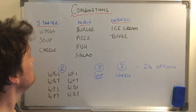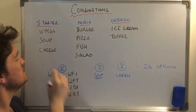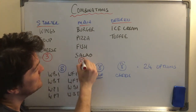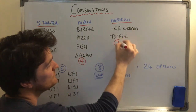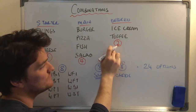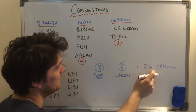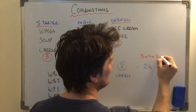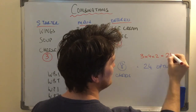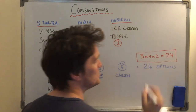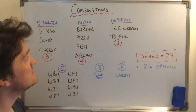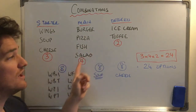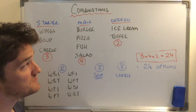How many choices do we have for starter? Three. For main? Four. For dessert? Two. Looking at three, four, and two — can we see how they make twenty-four? Three multiplied by four multiplied by two gives us twenty-four. This is the shortcut with combinations: you just times all the choices together and that gives you the total number of options.